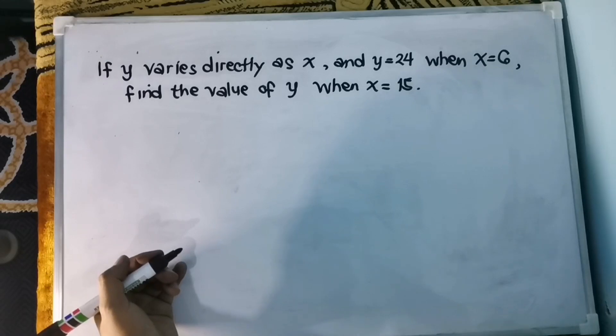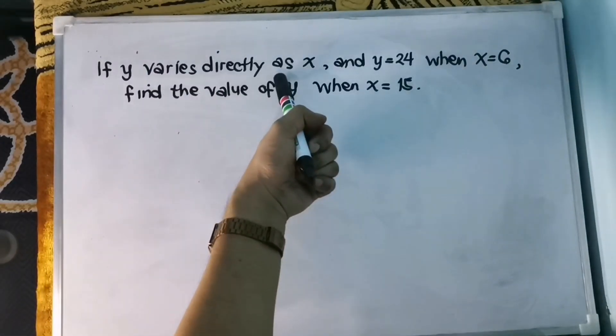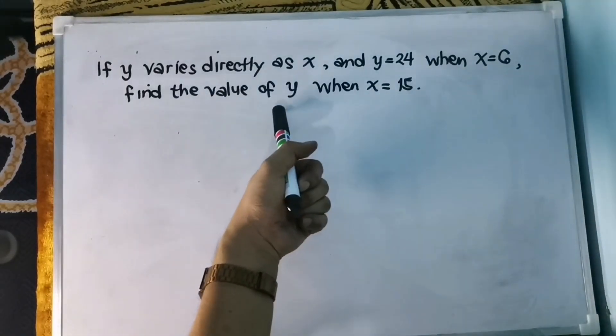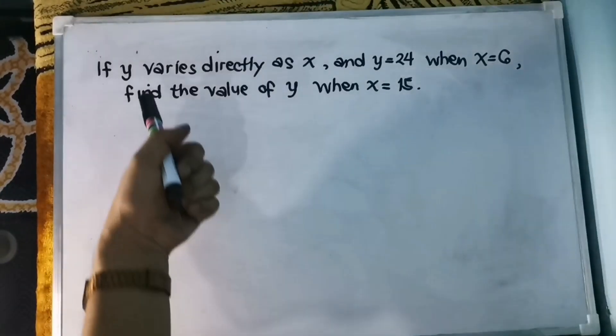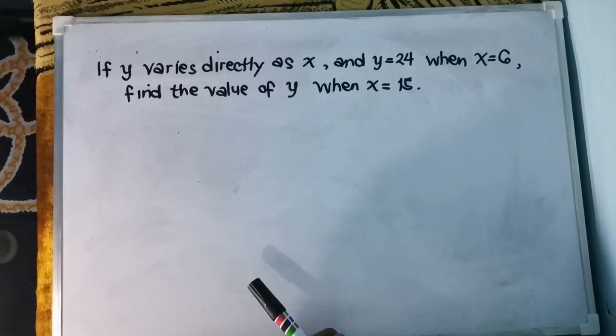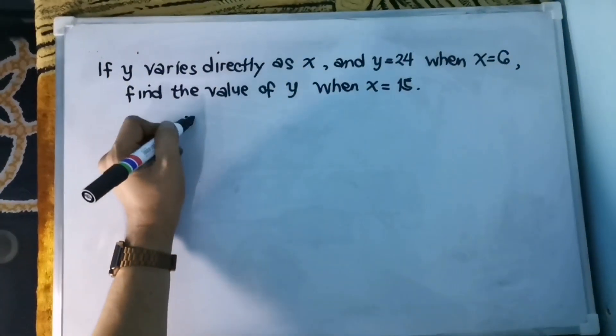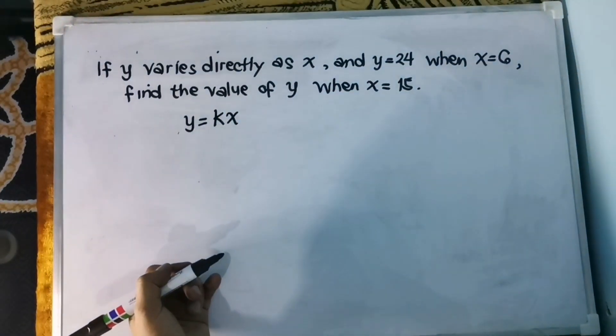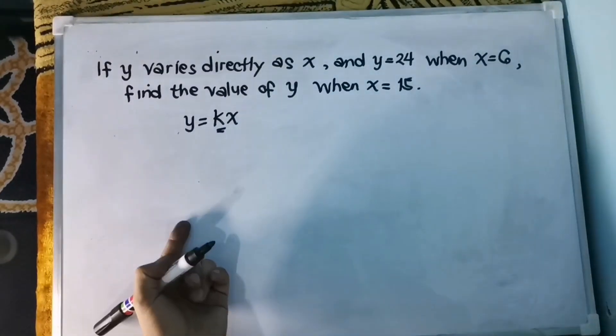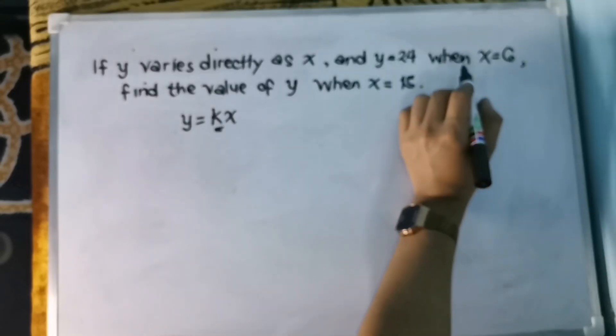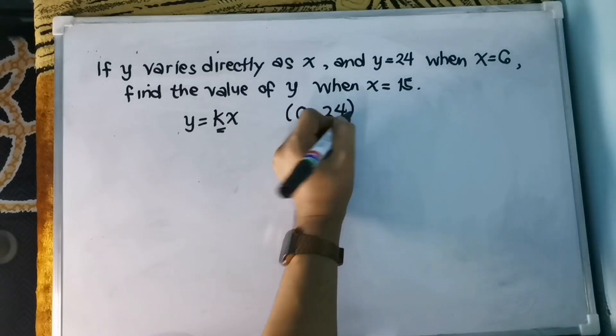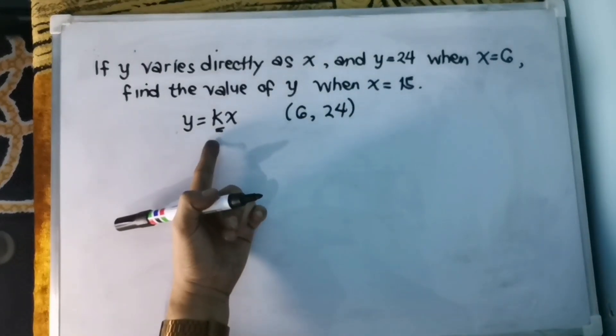For our last problem, if y varies directly as x and y equals 24 when x equals 6, find the value of y when x equals 15. It says here that varies directly. Of course, we are going to use the equation of variation, which is y equals kx. And let us find first the constant of variation, which is yung ating k. Yung ating given is y equals 24 and then x equals 6. So we have here an ordered pair 6 and 24. Just substitute to find the constant of variation.